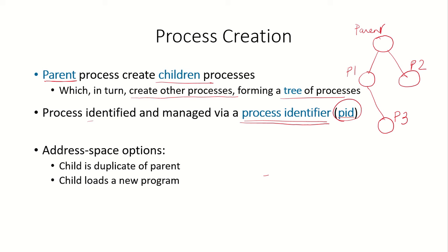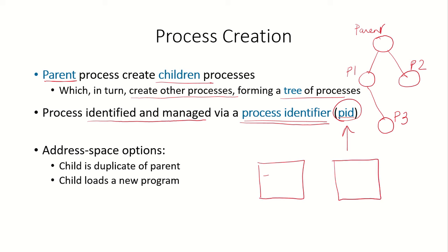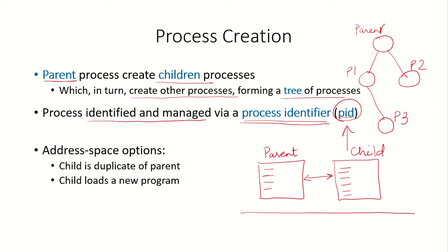The process is identified and managed in the computer system using this process identifier. Once a process has been created, it is an identical copy of its parent. So if this is the parent and a child process has been created, this child will be an identical copy having the same set of instructions as the parent. The parent creates this process by using the fork system call.